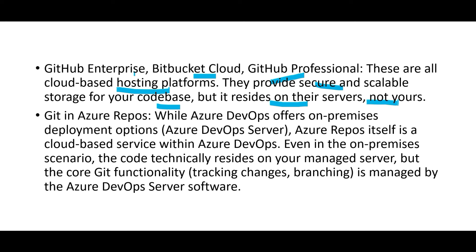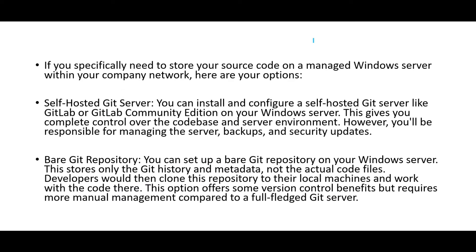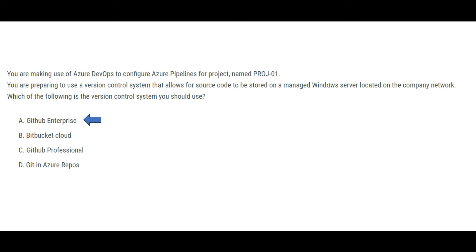Git in Azure Repos — DevOps offers on-premises deployment options, but Azure Repos itself is a cloud-based service within DevOps. Even in the on-premises scenario, the core Git functionality is managed by DevOps. If you want to store it on a managed Windows server on your company network, you should use either a self-hosted Git server — like GitLab installed and configured on your Windows server, not on cloud, giving you full control of the code base — or a bare Git repository set up on your Windows server, which stores Git history and metadata.